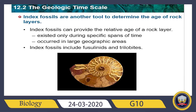Before we talk about the geologic time scale, we want to discuss something called index fossils. We have learned that both relative dating and radiometric, or absolute, dating can help us determine the age of rock layers. Scientists trying to determine the age of a rock layer almost always use two or more methods to confirm results, and one of them is the index fossil. Index fossils provide an additional tool to determine the age of fossils or the strata in which they are found.